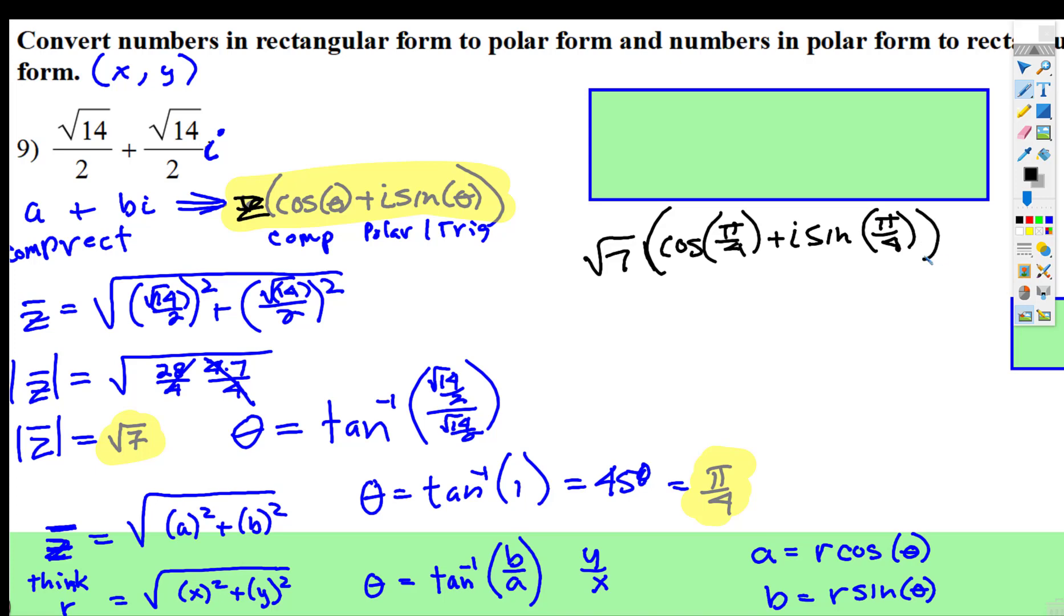Then we have cosine π/4 plus i sine π/4. Very similar process. It can get a bit confusing because there's two different forms of rectangular and two different forms of polar. But you know it's complex when that i is involved. That is it for this one.